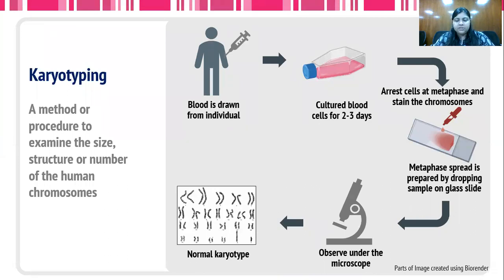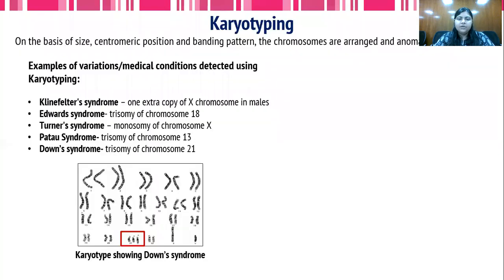After the metaphase preparation, the slide is visualized under the microscope and the karyotype is then analyzed. This is a normal karyotype for a diploid human male, as shown here.